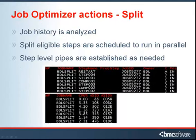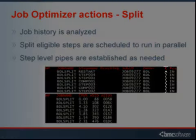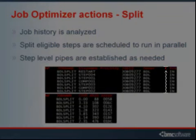Once the job is running, the job history is analyzed, split eligible steps are scheduled to run in parallel, and the step level pipes are established as needed. Here are some screenshots of jobs running in parallel. Notice that the Initiator class changes to the right bracket for job steps that are actively being split.